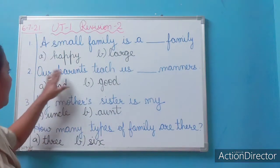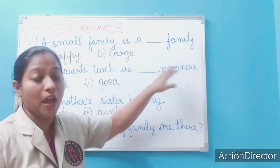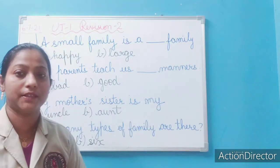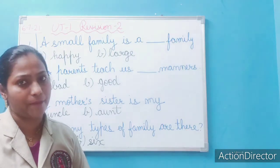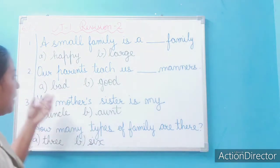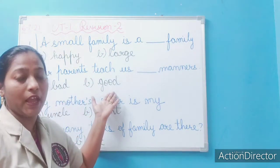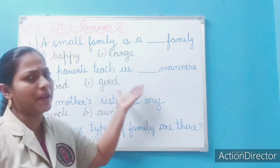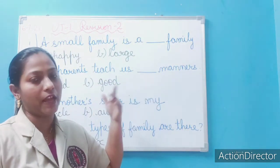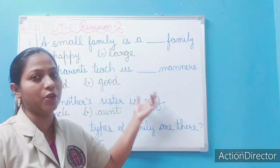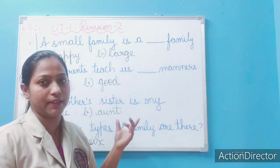Next question: Our parents teach us blank manners. The options are parents, grandparents, family members, bad, or good. Of course, our parents teach us good manners. There might be three or four options; whichever is the correct option, you will just tick it.